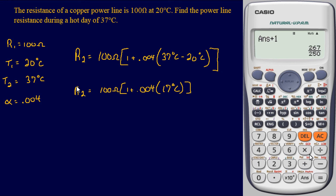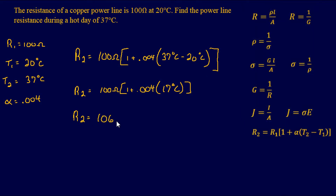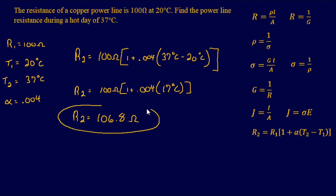Plugging the rest into our calculator gives a final answer of 106.8 ohms. As we talked about earlier, increasing temperature increases resistance. By raising the temperature by 17 degrees on this hot day, the resistance of this power line increased by 6.8 ohms. That is our final answer.